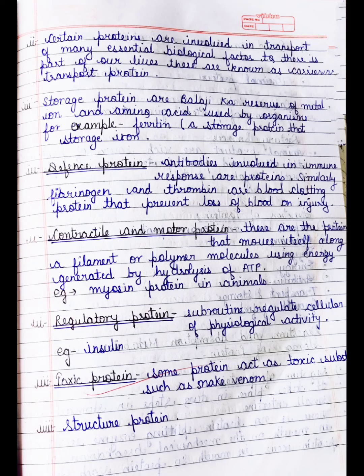Further classifications based on biological function include: defense proteins — antibodies involved in immune response; fibrinogen and thrombin are blood clotting proteins that prevent loss of blood on injury. Contractile and motor proteins help in movement. Regulatory proteins regulate physiological activity in the body — example is insulin. Toxic proteins act as toxic substances — example is snake venom. Finally there is structural protein.